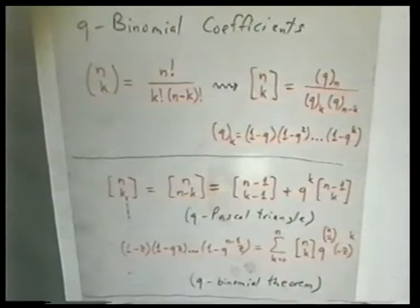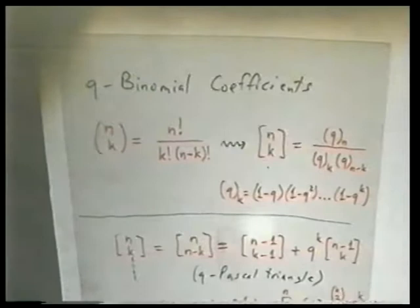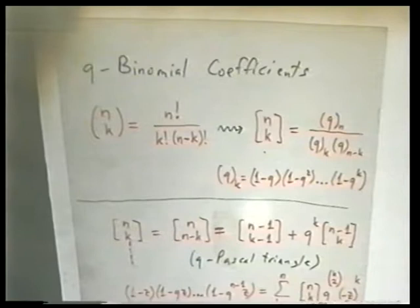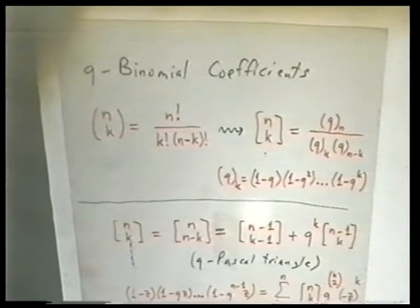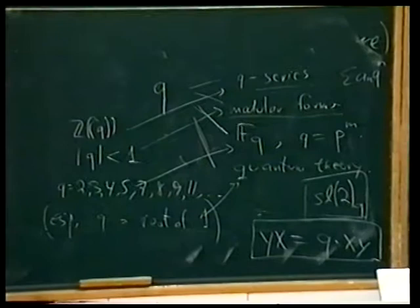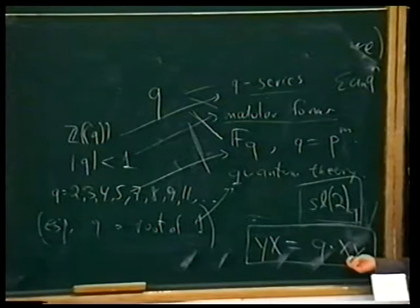If q is a root of unity, then the q-binomial coefficient, which is a polynomial, may have zeros. By the Pascal triangle inductive property it's a polynomial with no poles, and obviously zeros can only be at roots of unity, where special things happen. The general theme here is that one should eventually think non-commutatively — that's the theme of the whole 21st century, and even bits of the 20th. But this was just a hint; what will come into my story is specialization to roots of unity.